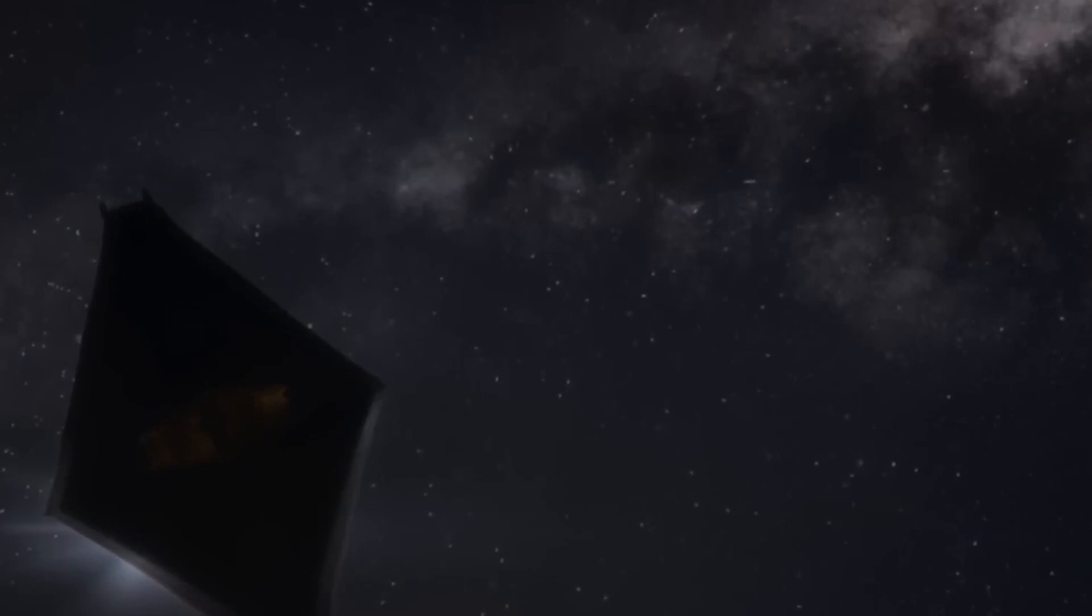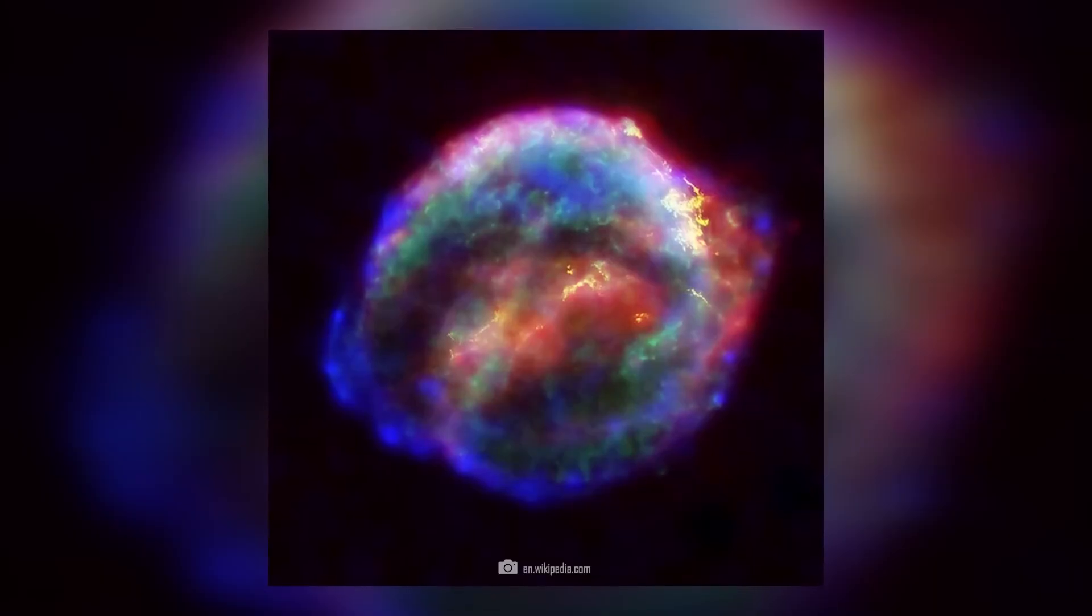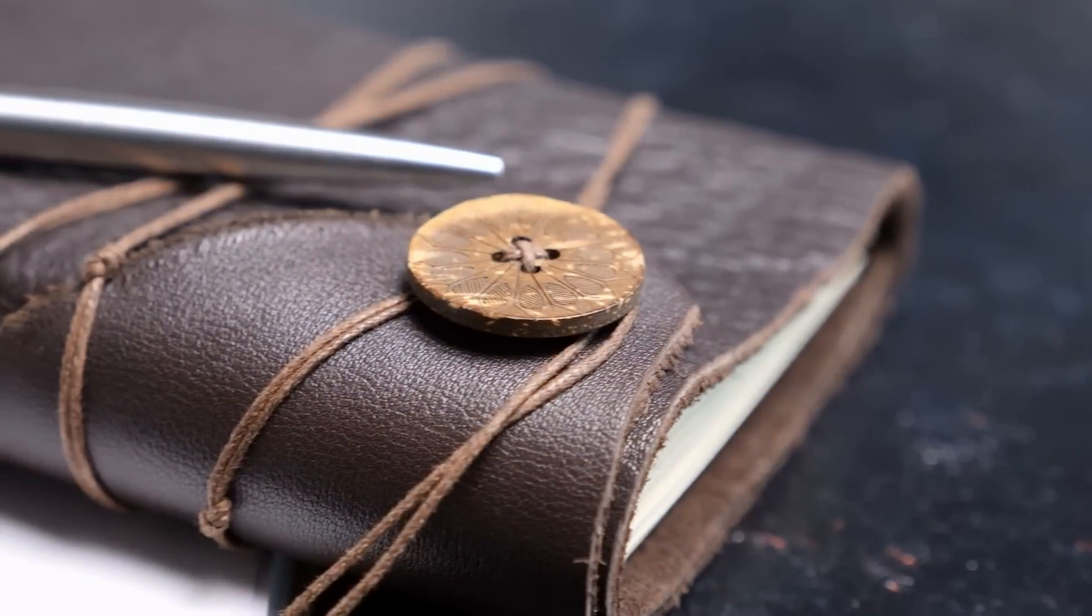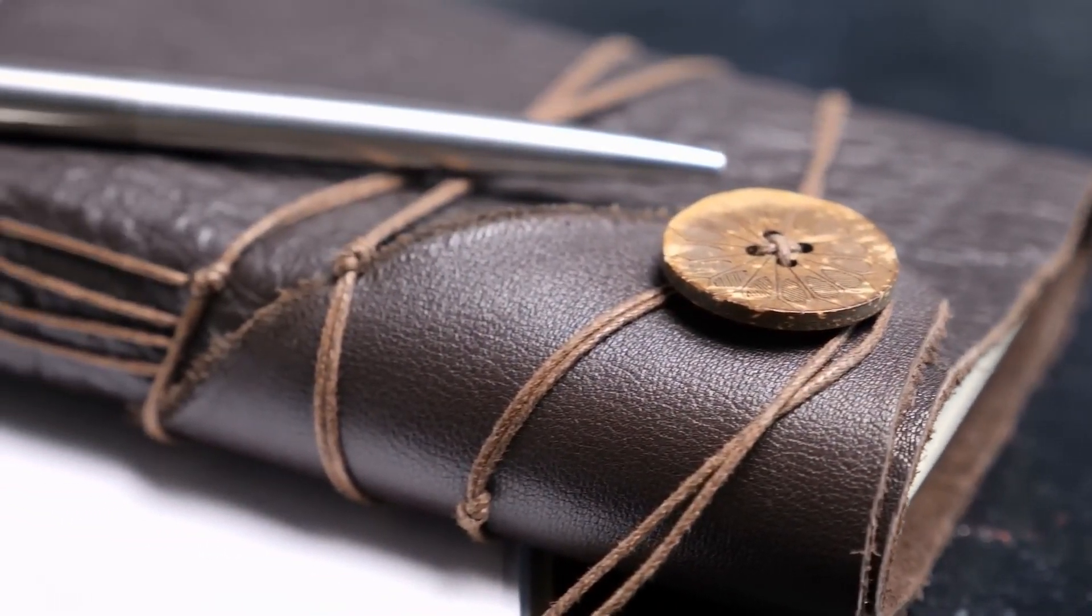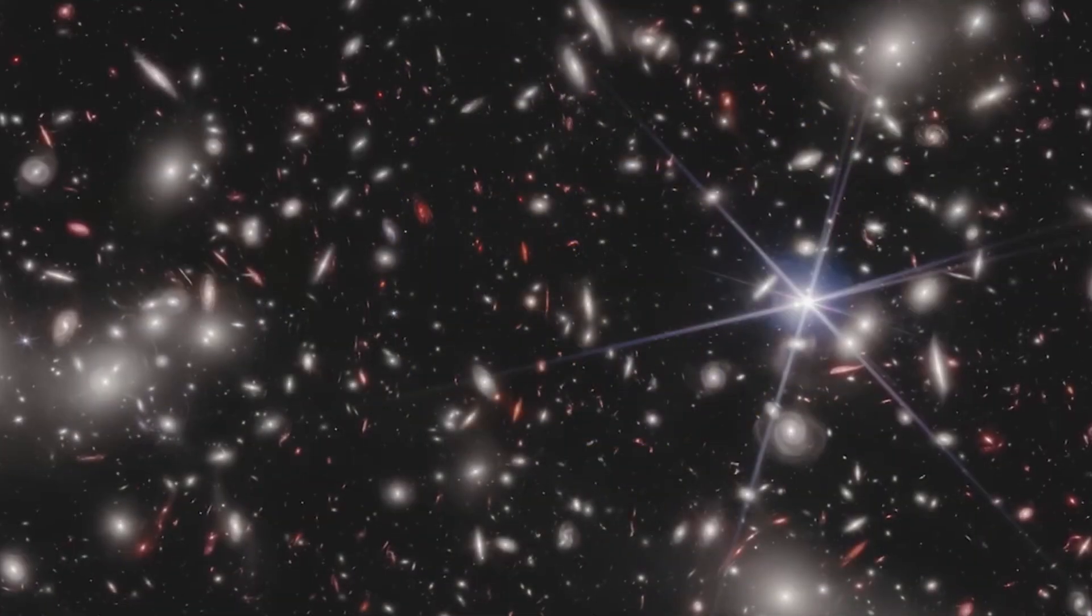Even further back in history, there was the supernova SN 1604, also known as Kepler's supernova. In 1604, the famous astronomer observed the apparent birth of a new celestial body in the constellation of the Serpent Bearer.